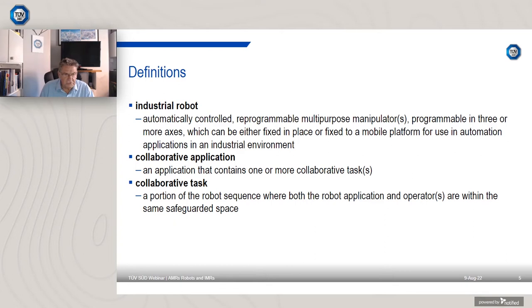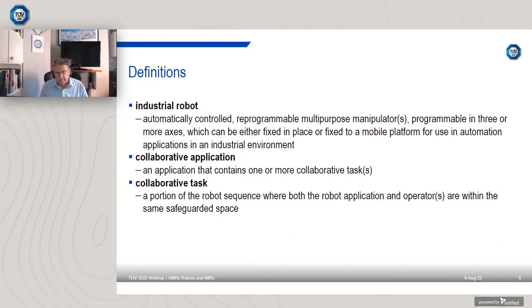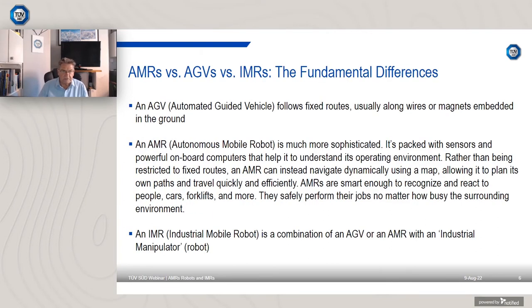Traditionally, industrial robots have been used enclosed in physical guarding - very often called robot cells - where robots would only be accessible by people entering the danger zone via monitored movable guards or similar measures. Collaborative applications acknowledge that there will be people and robots in the same zone, so they could come into contact with each other. That's the important distinction.